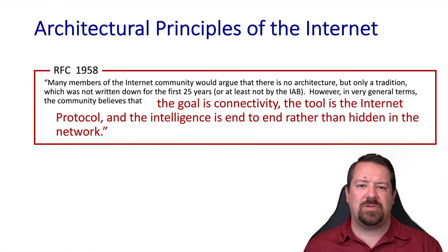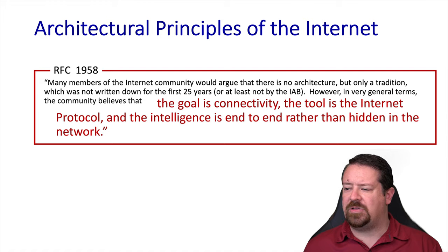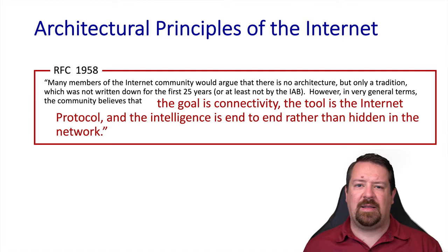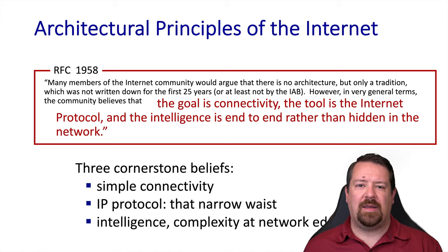Let's contrast this with RFC 1958, which says that the goal of the internet is connectivity, that the tool for this is the internet protocol, and that to the extent possible, intelligence is implemented at the edge rather than hidden in the middle of the network. This allows for the things that have made the internet as successful as it is, including simple connectivity, IP everywhere, and keeping complexity at the edge.